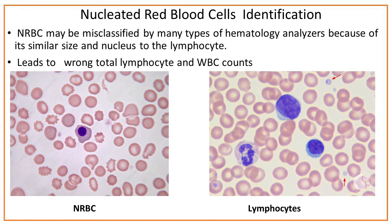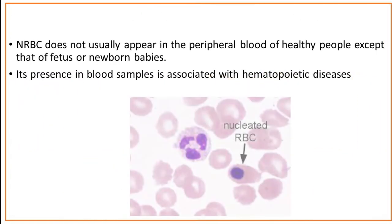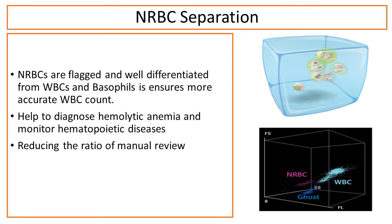Nucleated red blood cell (NRBC) identification: NRBCs may be misclassified by many hematology analyzers because of their similar size and nucleus to lymphocytes, causing incorrect total lymphocyte and WBC counts. NRBCs do not usually appear in peripheral blood of healthy people, except in fetuses or newborns. Their presence in blood samples is associated with hematopoietic diseases, making automated identification and accurate counting of NRBCs of great clinical significance.